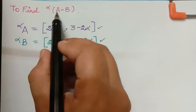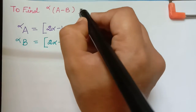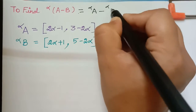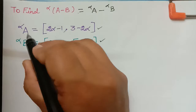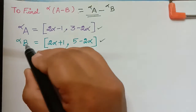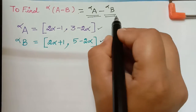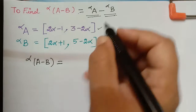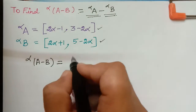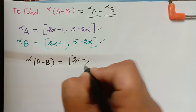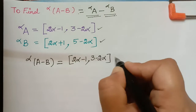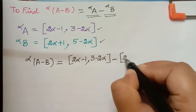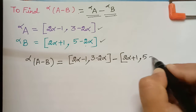Now we have to find the alpha cut of a minus b. By the formula, the alpha cut of a minus b is equal to the alpha cut of a minus the alpha cut of b. Substituting, the alpha cut of a minus b equals the interval [2α − 1, 3 − 2α] minus the interval [2α + 1, 5 − 2α].